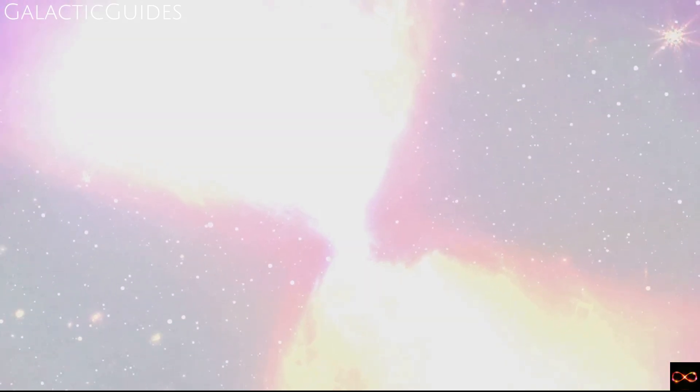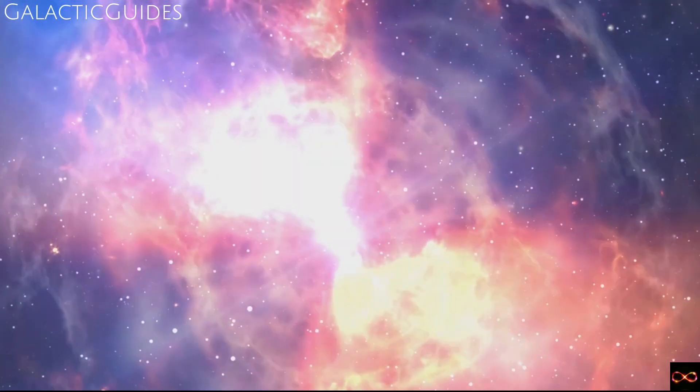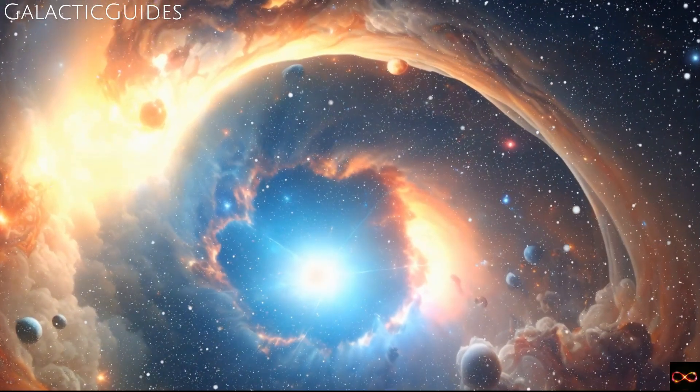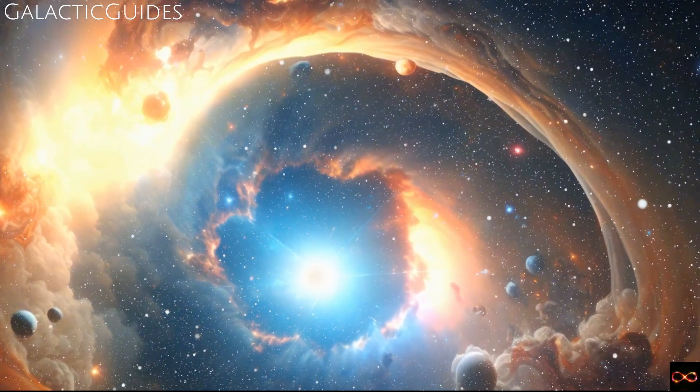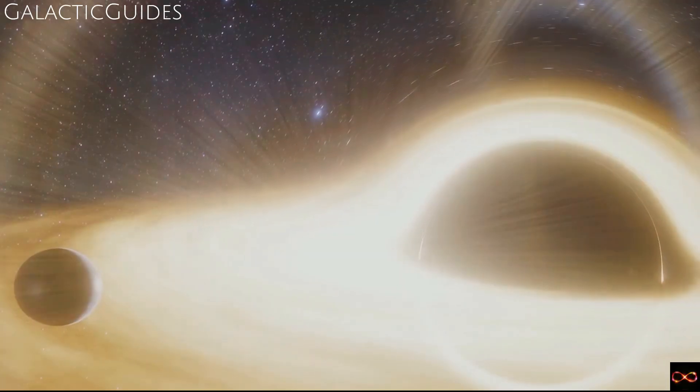Similarly, when a star has exhausted its nuclear fuel, it can no longer resist the inward pull of gravity. The star's core collapses under its own weight, causing the outer layers to explode outward in a supernova, an explosion so bright it can outshine entire galaxies.